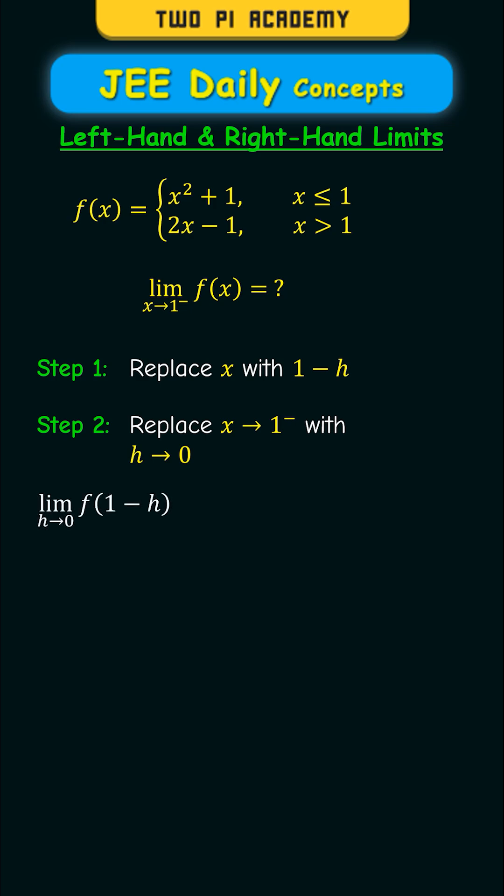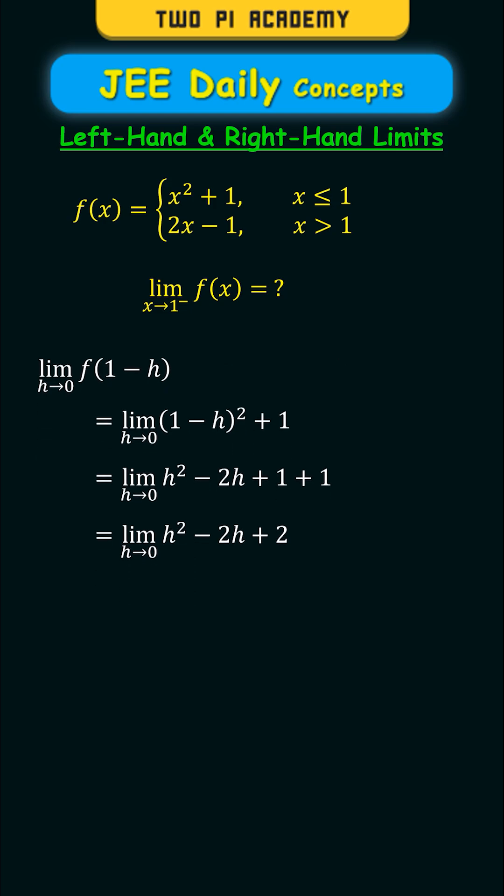And here, 1 minus h will be less than 1, so therefore, you have to use the first variant of the function. And finally, by simplifying this and replacing h with 0, you'll get the left-hand limit as 2.